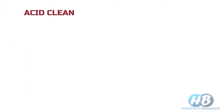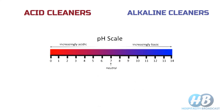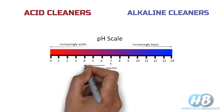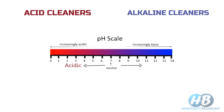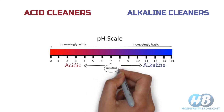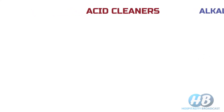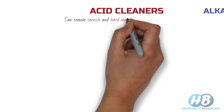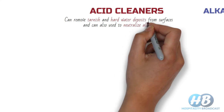Next we have acidic cleaners and alkaline cleaners. The pH scale is used to identify acidic and alkaline solutions. On a pH scale of 0 to 14, a pH value below 7 is considered acidic and any value over 7 is considered alkaline. If pH value is 7, it is considered neutral. Let's first discuss acidic cleaners. Acids can remove tarnish and hard water deposits from surfaces and can also be used to neutralize alkalis.